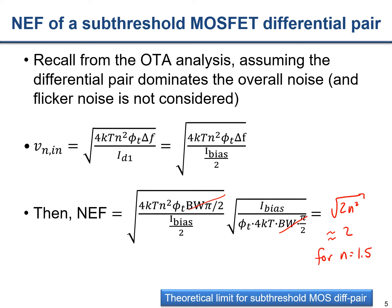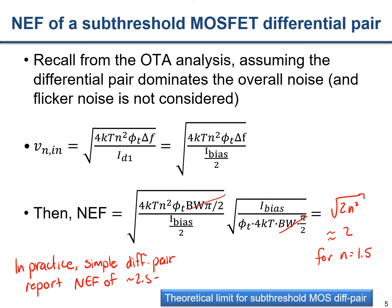If you see someone reporting an NEF less than 2 in the literature, they're clearly not doing a simple sub-threshold differential pair — maybe they're doing some current reuse strategy. It is possible to get an NEF lower than 2 with alternative techniques. In practice, simple differential-pair-based circuits report NEFs of roughly 2.5 to 4.0, which is a reasonable range unless current reuse techniques are employed.